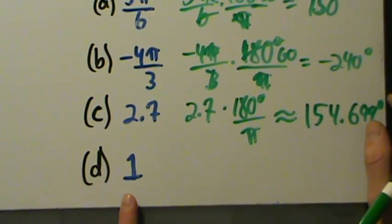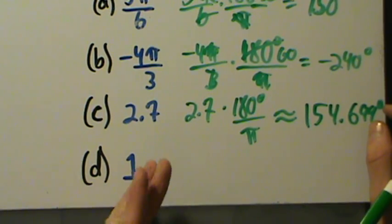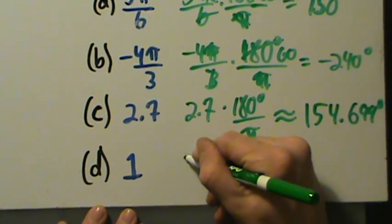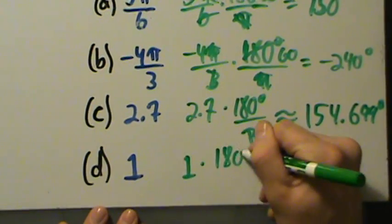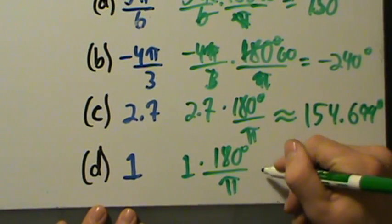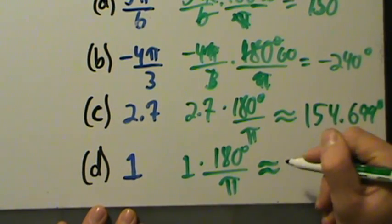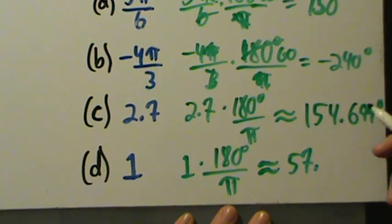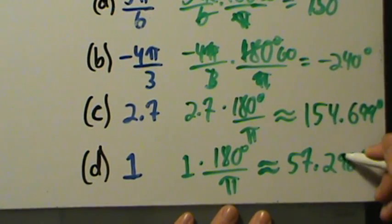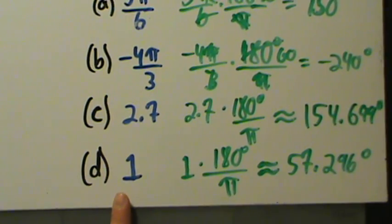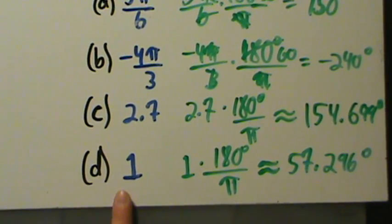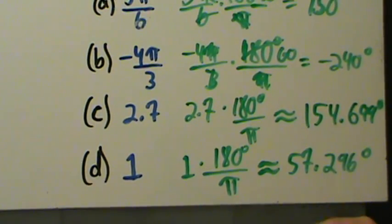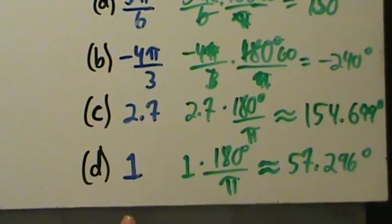How about 1 radian? We saw in the last video that 1 radian is quite a bit larger than 1 degree. Take 1 radian times 180 degrees over pi — it's approximate — and you get about 57.296 degrees. So 1 radian is almost 60 times as big as 1 degree.